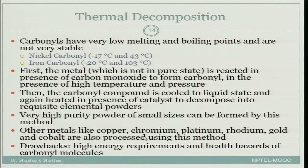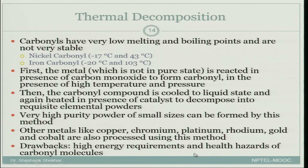Other metals like copper, chromium, platinum, rhodium, gold, and cobalt are also processed using this carbonyl method. However, the method is very energy intensive — you need high temperature and high pressure to form the carbonyl, then cool it, then heat it again with a catalyst. It is not easy to access, but it offers high purity and very small powder size.